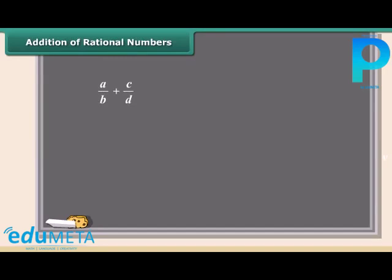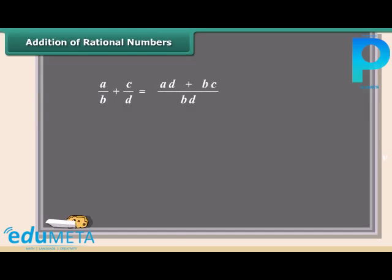How to add rational numbers? It's easy. Before we add, keep in mind the rational numbers should have the same bottom number, that is, both the rational numbers must have a common denominator. The easiest way to do this is to multiply both parts of each number by the bottom part of the other. Here is an example of addition. We will add 5 by 4 and 1 by 4. The denominators are already the same. Now add the numerators and put the answer over the same denominator. This fraction can be further simplified to 3 by 2.